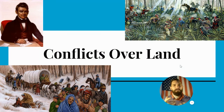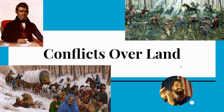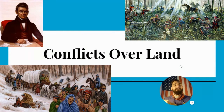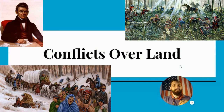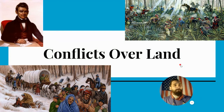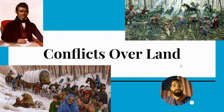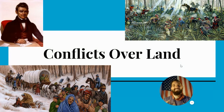Jackson supporters started calling this the corrupt bargain of 1824. By the 1828 election, the Democrat Party split. Those who support Jackson are known as Democrats — the foundation of the Democratic Party today. Then you have the National Republicans, who favor a strong central government, whereas the Democrats favor states' rights more or less. Today's lesson is going to be conflicts over lands — we'll be talking about Native American issues, mostly Cherokee and Seminole in nature.